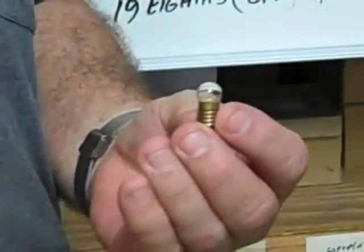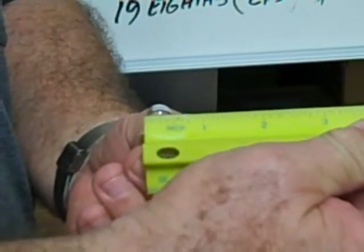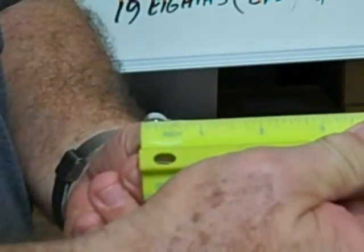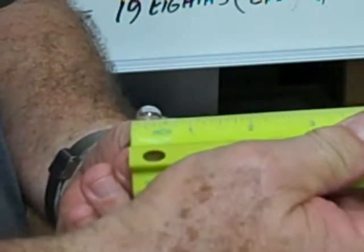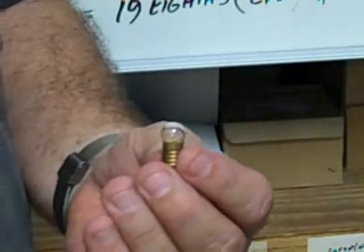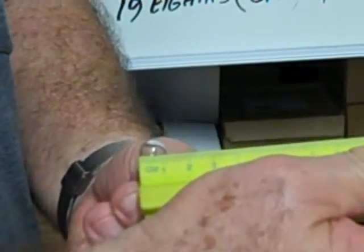This is a G 3.5. It has a 3.5 eighths envelope, which is the diameter of the globe, which is equal to 7 sixteenths of an inch, or 11 millimeters.